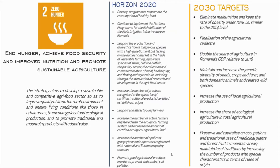Strategy Goal No. 2 — Zero Hunger — aims to end hunger, achieve food security, and improve nutrition and promote sustainable agriculture. The Strategy aims to develop a sustainable and competitive agri-food sector, so as to improve quality of life in the rural environment and ensure living conditions like those in urban areas, to encourage local and ecological production, and to promote traditional and mountain products with added value.